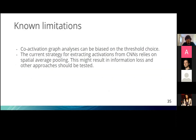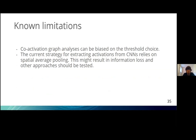Some limitations of our method so far: first, the method is somewhat sensitive to the threshold choice, which affects all analyses. Second, the current strategy for extracting activations from CNNs relies on spatial average pooling — because a filter in a CNN outputs more than a single activation value — and this might result in information loss. We want to test other approaches to overcome this.